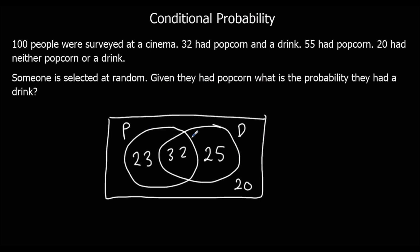So someone's selected at random, given they had popcorn. So popcorn is what's given, so that's what it's out of. And that's 55 people. The probability they had a drink. So in the circle, these people had a drink. So 32 out of 55 should have been the answer.